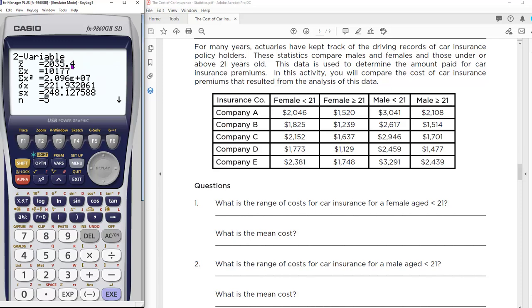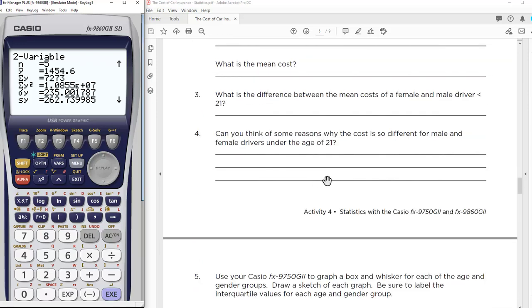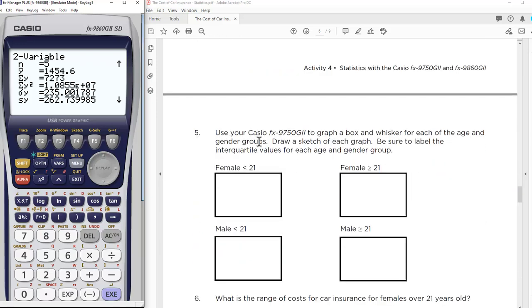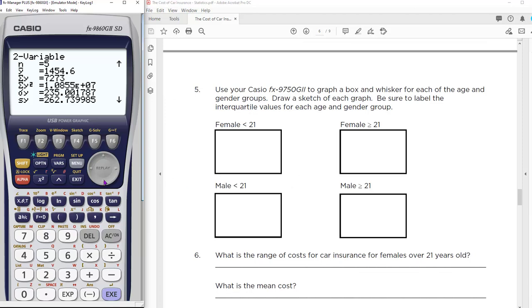Let's calculate two variables. This is nice because we can compare. Here's the mean. Remember X came from the first list. The mean for under 21 is 2035. If we scroll to Y, the mean is 1454. Quite a difference. Females under 21 are paying quite a bit more on average than females over 21, and that's what we're exploring. The first set of questions is about looking at these numbers and making conclusions. Then we want to graph it.